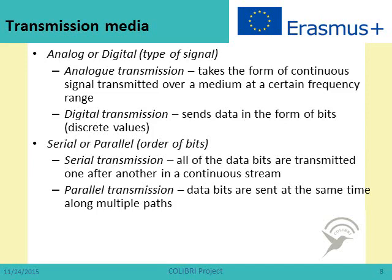Another important concept associated with transmission media is the type of data or signal being transmitted. We can divide these signals into two types: analog and digital. Analog transmission takes the form of a continuous signal transmitted over a medium at a certain frequency range, meaning any value in the signal is allowed. Digital transmission sends data in the form of bits or discrete values — only certain values are allowed.